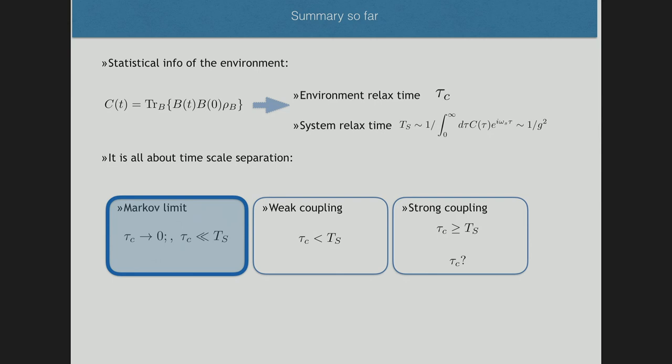There are three different regimes. We are going to focus on the weak coupling and Markov limits. These two regimes correspond to cases where there is a large separation of evolution time scales, in which we can assume that the environment recovers very fast — in the weak coupling case — or almost instantaneously — in the Markov limit — from the interaction with the system. Later on you will get some ideas of how things become in the strong coupling regime.